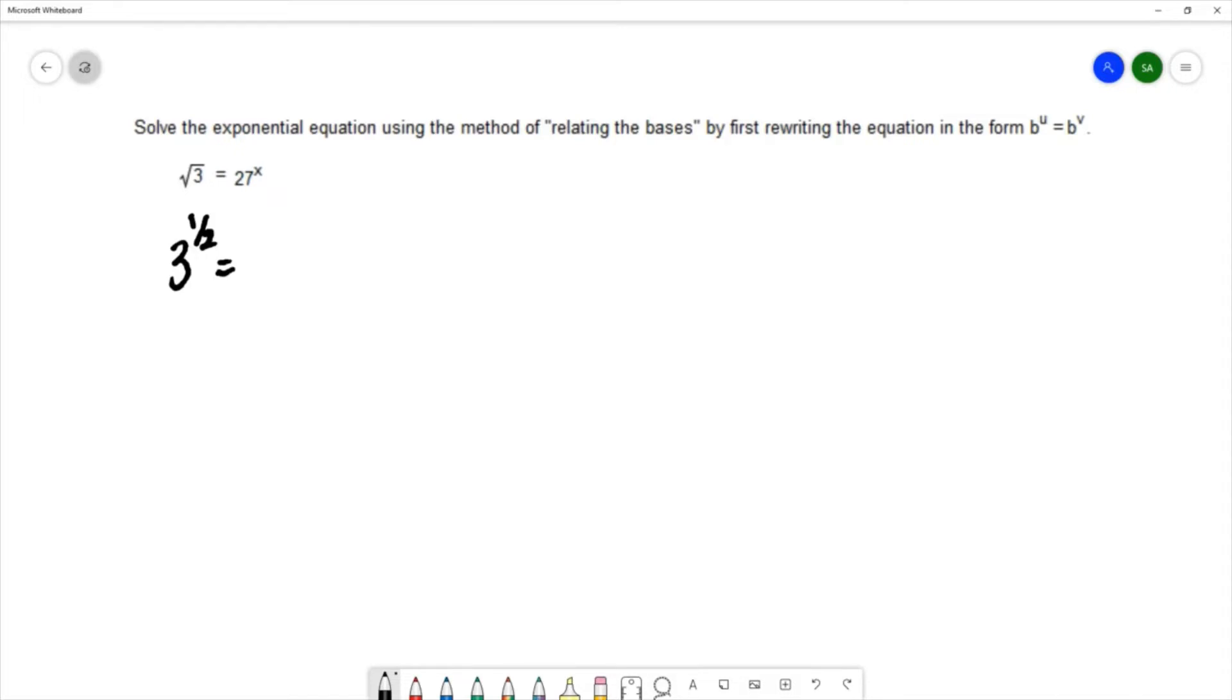On the right hand side I have 27, and 27 is the same thing as 3 times 3 times 3, or 3 cubed. I can write this as 3 to the third power, and I would need to carry down that x that was already in the exponent.